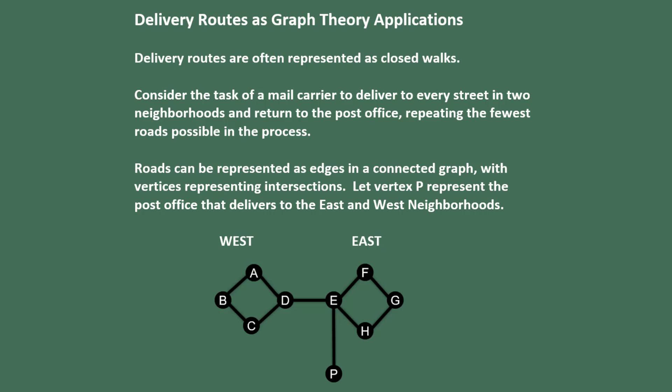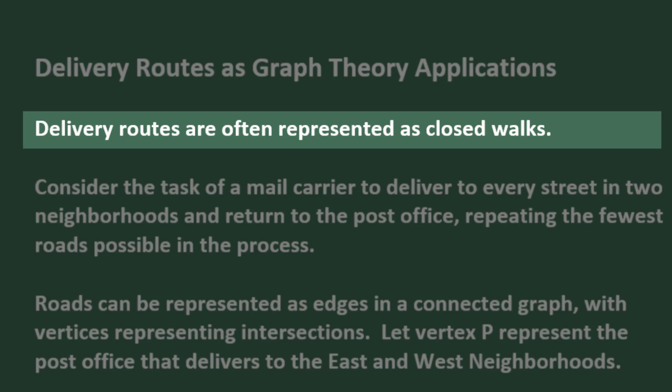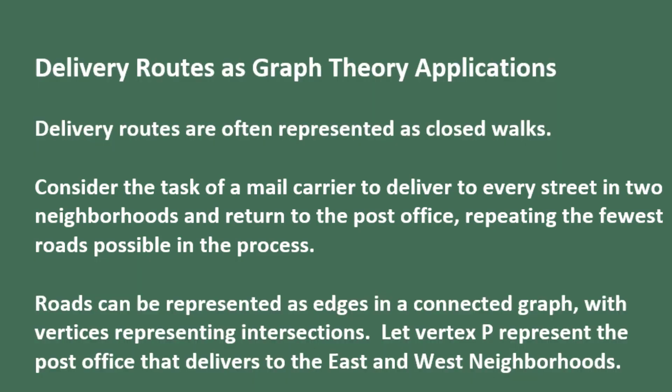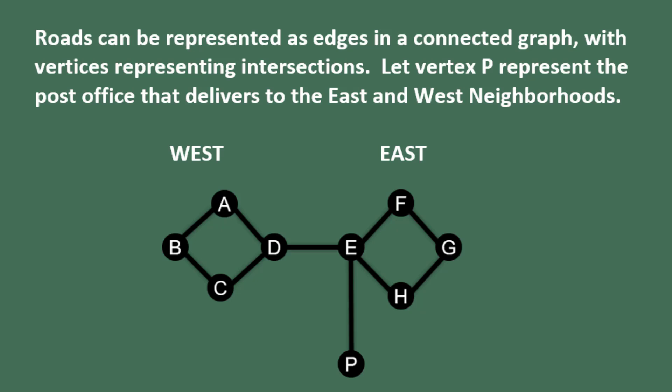Now let's talk about delivery routes as graph theory applications. Delivery routes are often represented as closed walks. Consider the task of a mail carrier to deliver to every street in two neighborhoods and return to the post office, repeating the fewest roads possible in the process to save gas and time. Roads can be represented as edges in a connected graph, with the vertices representing intersections. In this graph, we're going to let vertex P represent the post office that delivers to these two neighborhoods, west and east.